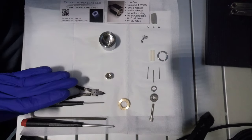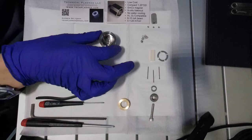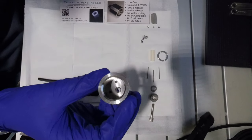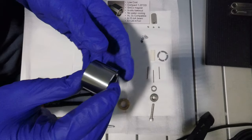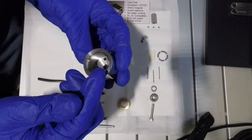This will be an assembly video for the anode layer ion source. First we'll start with the ion source case. This is made out of 410 stainless steel which acts as a magnetic return path.